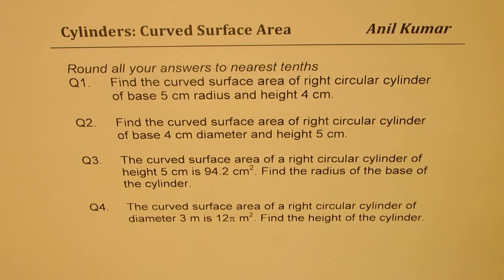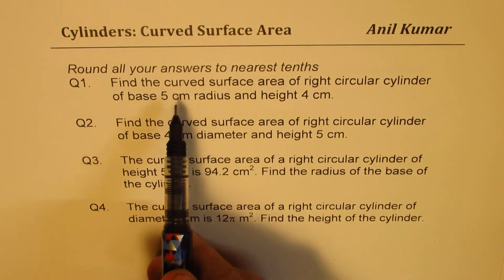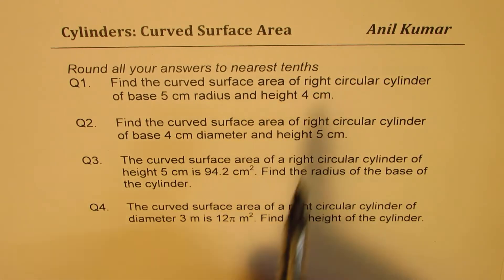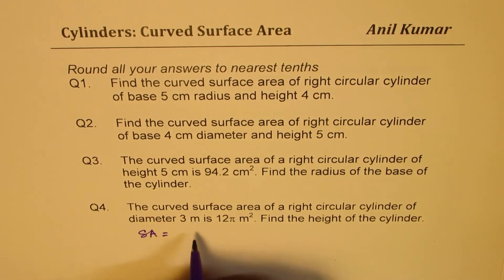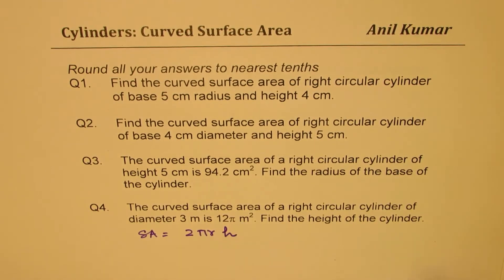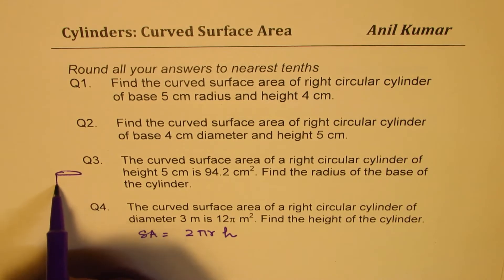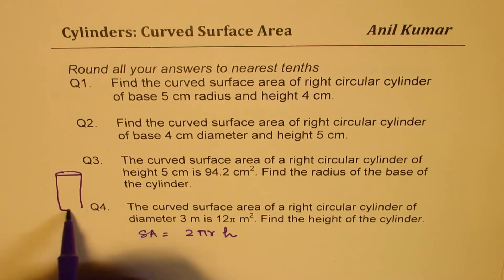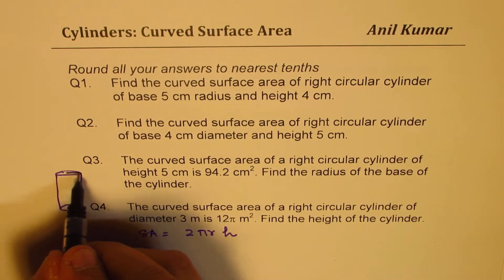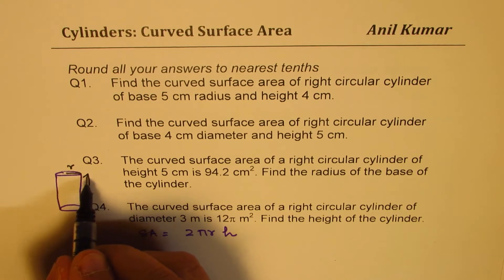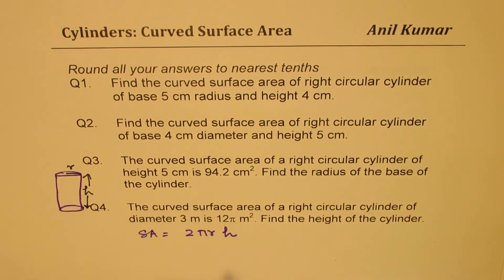We are given different questions to work with the formula of curved surface area for a right circular cylinder. Basically it is working with just one formula. The curved surface area for a circular cylinder is 2πrh, where r is the radius. If I sketch a cylinder with radius r and height h, that is the surface area.